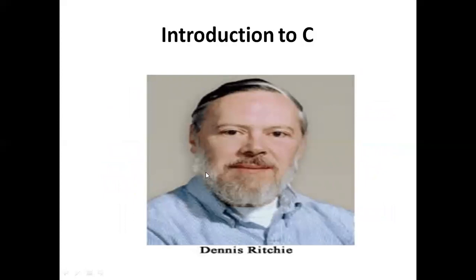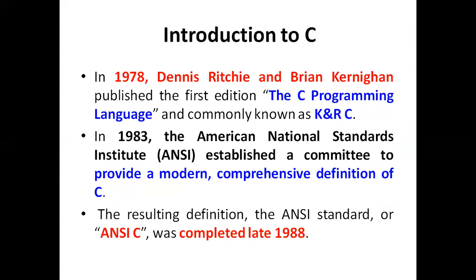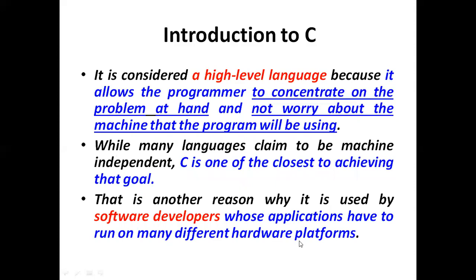In 1978, Dennis Ritchie and Brian Kernighan published the first edition of the C programming language, commonly known as K&R C. In 1983, they introduced ANSI C — American National Standard Institute C. The ANSI C standard was completed in the late 1980s.